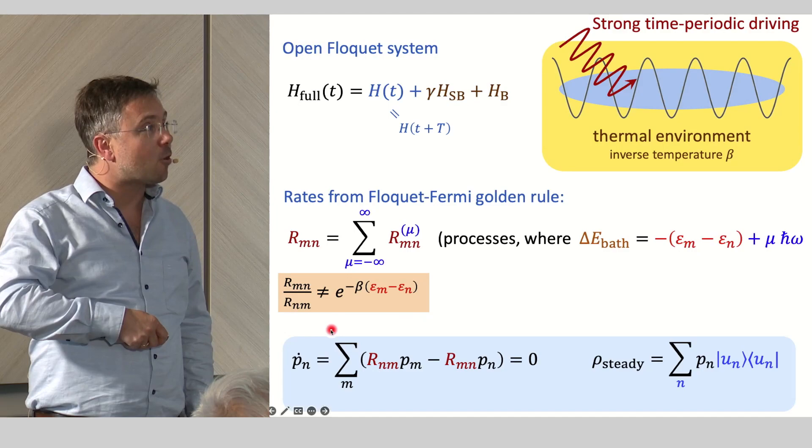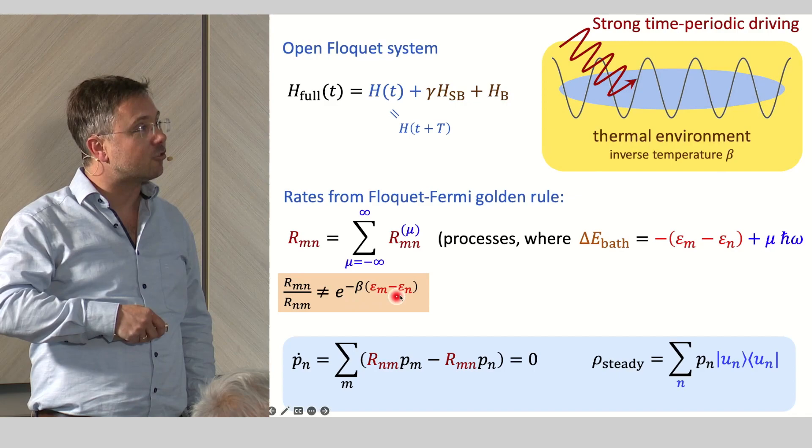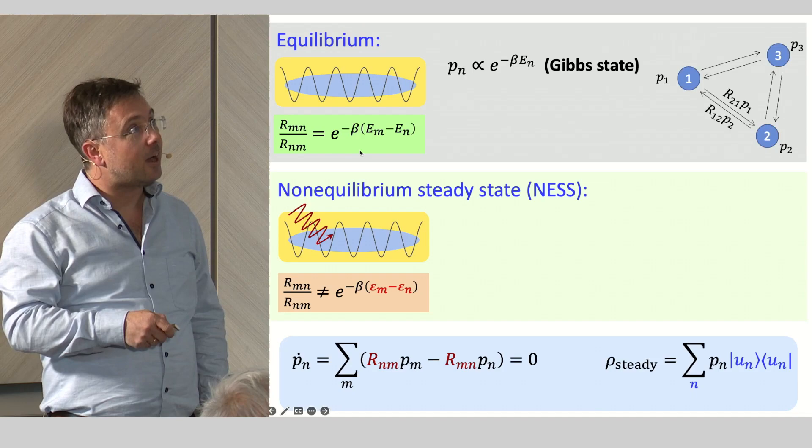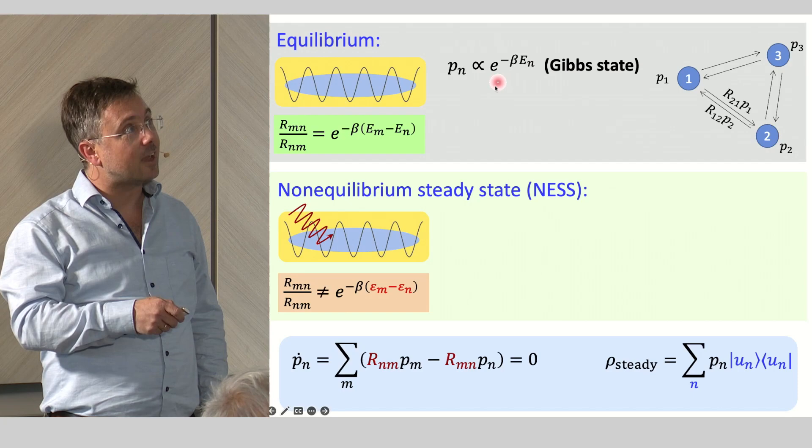As a result, these rates do not obey a condition like this, which equilibrium rates would fulfill with respect to the energy. The ratio between the rate and its backward rate is not just given by such an exponential factor depending on the inverse temperature and the quasi-energy difference. This is different from equilibrium processes. If you have just an undriven system and weak contact with the bath, you have this.